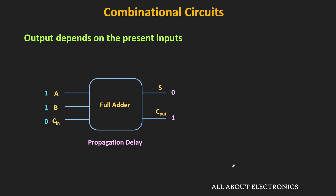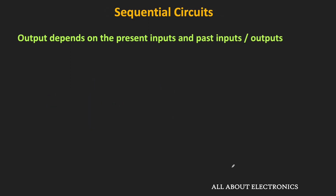In sequential circuits, the output not only depends on the present inputs but also on the past inputs. That means the output is a function of the present inputs as well as the past inputs. Since it is a function of past inputs, this sequential circuit must have some memory element.